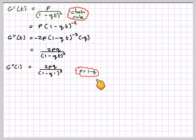p is equal to 1 minus q, so we're going to have 2pq over p³. Obviously, they will cancel, so we've got 2q over p².